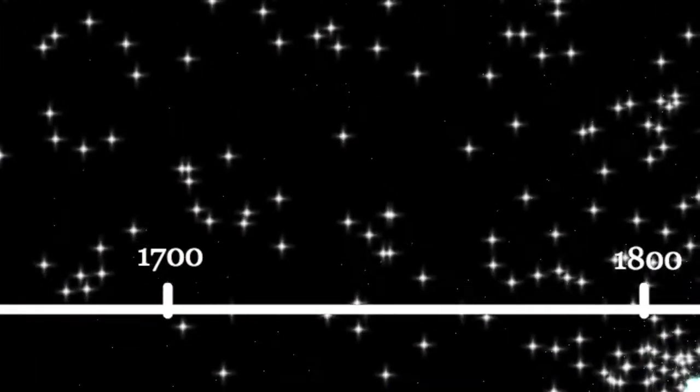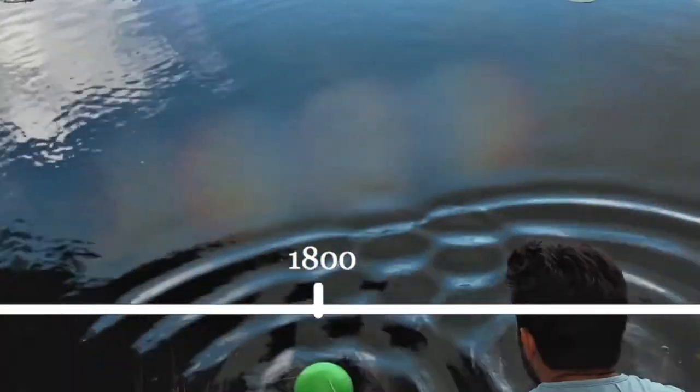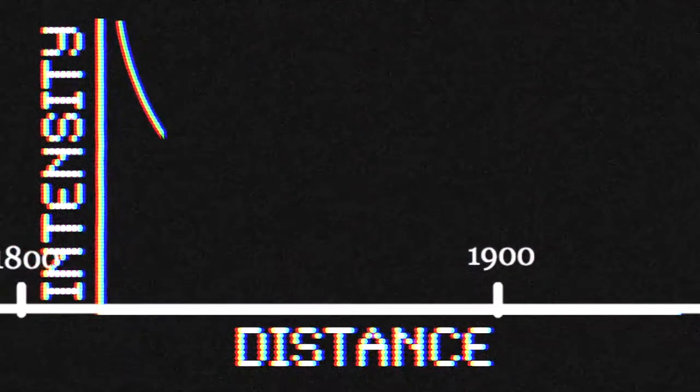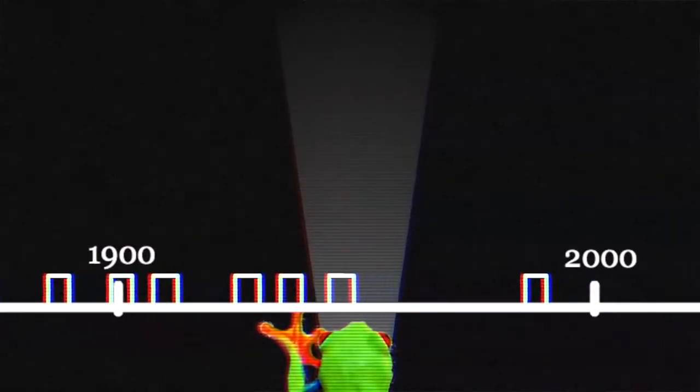This debate appeared to be settled in 1801 by Young's double slit experiment, which showed light passing through two slits produced patterns like water waves. But by 1900, it was clear that light energy was not evenly distributed as expected for a wave. Rather, on the smallest scales, it comes in lumps called quanta or photons.